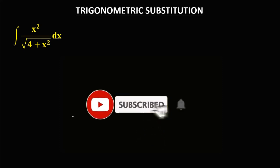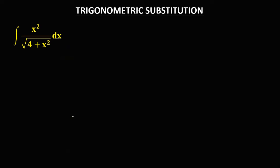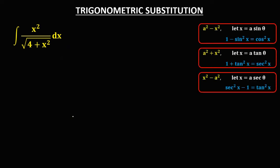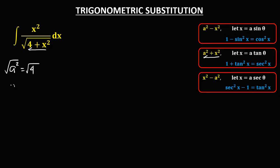Let's discuss trigonometric substitution. In the given integral we have 4 plus x squared, so we're going to use the equation a squared plus x squared. Since a squared equals 4, we take the square root to find a equals 2.